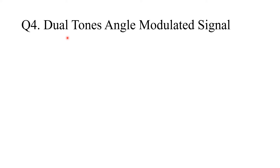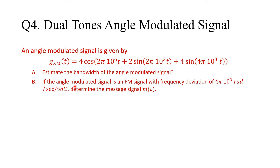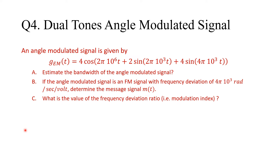Question four introduces a dual-tone angle modulated signal — a bit more challenging. An angle modulated signal is given by the following expression. It doesn't specify PM or FM. The requests are: estimate the bandwidth of the angle modulated signal; if it is an FM signal with frequency deviation constant of 4π × 10⁴ radians per second per volt, determine the message signal; and what is the value of the modulation index? Take about eight minutes to answer these three parts.